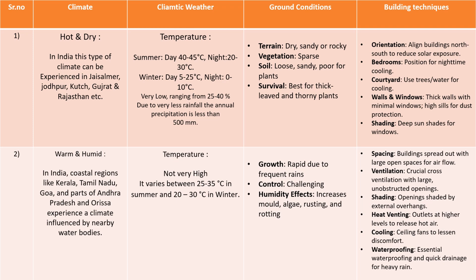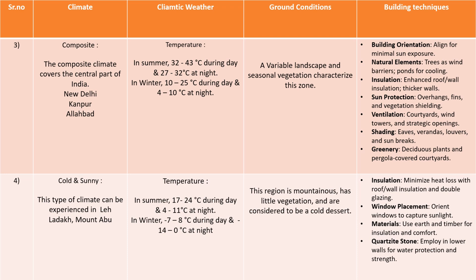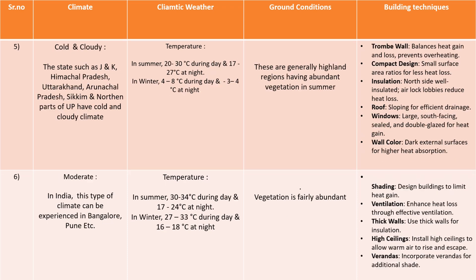The table covers hot and dry — the temperature, the climatic weather, the ground conditions for that particular climate, and then the building techniques. This will be easier to remember and revise when you don't have much time for the examination. Likewise we have composite, cold and sunny, cold and cloudy, and moderate. You can take a screenshot of these and literally stick it onto your revision board.